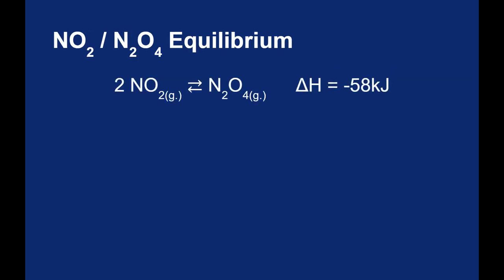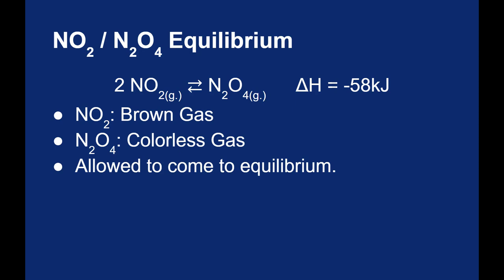So let's look at an example. Nitrogen dioxide turning into dinitrogen tetroxide. It's a very classic equilibrium example. This is the process that generates smog over cities. As written, this reaction is exothermic. It releases 58 kilojoules of energy for every mole of dinitrogen tetroxide produced. NO2 is a really dark brown gas. That's the smog. N2O4 is a clear colorless gas. We put these gases in a sealed container and allow them to come to equilibrium.